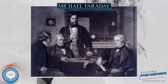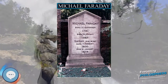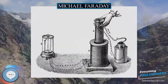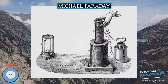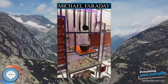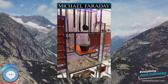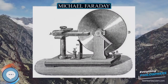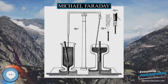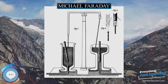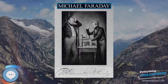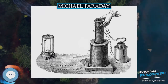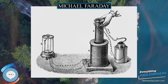In 1812, at the age of 20 and at the end of his apprenticeship, Faraday attended lectures by the eminent English chemist Humphry Davy of the Royal Institution and the Royal Society, and John Tatum, founder of the City Philosophical Society. Many of the tickets for these lectures were given to Faraday by William Dance, who was one of the founders of the Royal Philharmonic Society. Faraday subsequently sent Davy a 300-page book based on notes that he had taken during these lectures. Davy's reply was immediate, kind, and favorable.